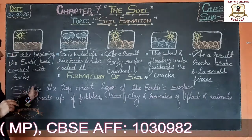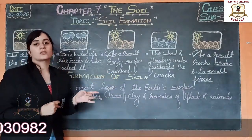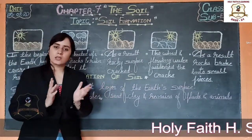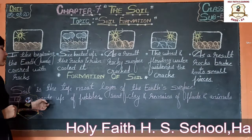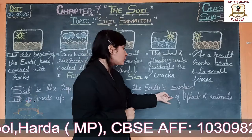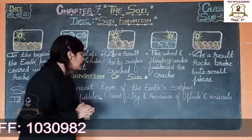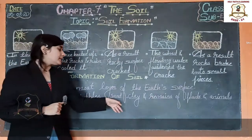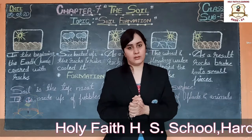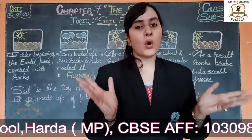What is soil? Soil is the topmost layer of the earth's surface. It is made up of pebbles, sand, clay, and remains of plants and animals. This is the process of soil formation.